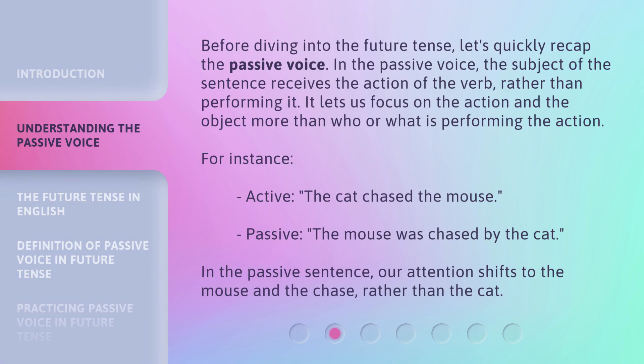Before diving into the future tense, let's quickly recap the passive voice. In the passive voice, the subject of the sentence receives the action of the verb, rather than performing it. It lets us focus on the action and the object more than who or what is performing the action. For instance, active: the cat chased the mouse. Passive: the mouse was chased by the cat. In the passive sentence, our attention shifts to the mouse and the chase, rather than the cat.